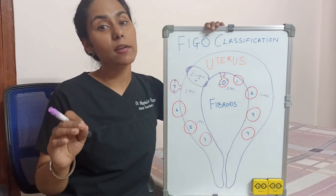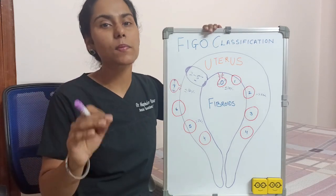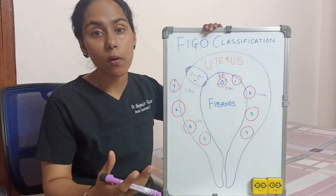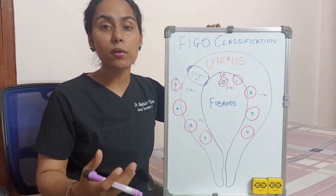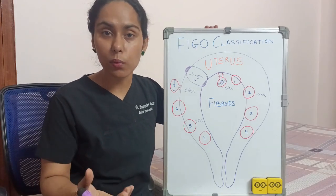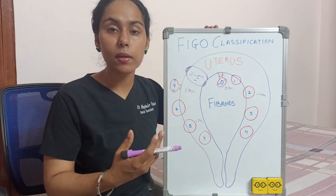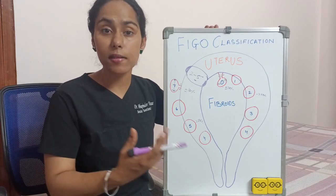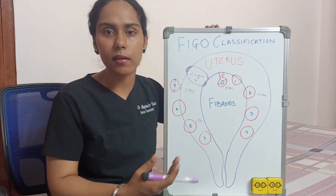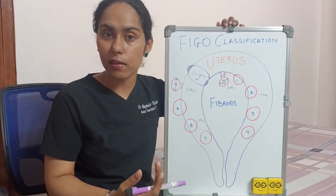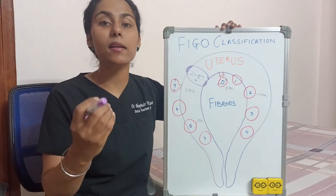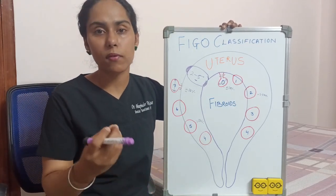Depending upon the type of fibroid the patient has, the symptoms vary. For example, if the patient has the submucosal type of fibroid, she is going to have symptoms such as profound bleeding, dysmenorrhea, or issues during conception. It can lead to infertility or recurrent pregnancy losses. Those are all the symptoms that a submucosal type of fibroid can cause.